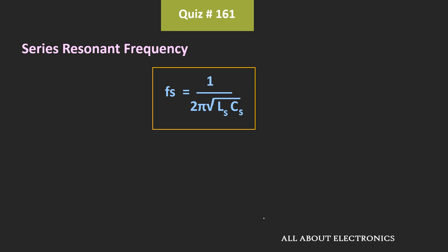First of all, let's find the series resonant frequency. Here, L is equal to 10 mH and the value of the series capacitance is equal to 10 pF. If we put the values in this expression, then the approximate value of the series resonant frequency is equal to 0.5 MHz.